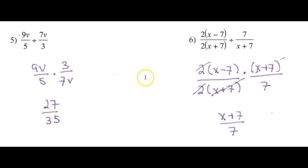In number 6, they have already factored everything for us. But remember, I have to take the reciprocal of this. So I'm going to leave this term and I'm going to multiply by x plus 7 over 7.